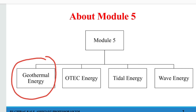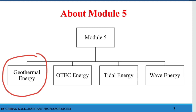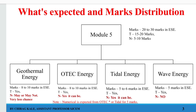Initially, we should know how much marks are distributed for this particular topic. The entire module, that is module number 5, will be for around 20 to 30 marks in your end semester exam. Out of which, there will be definitely 15 to 20 marks theory and 5 to 10 marks numerical. In the first topic, that is geothermal energy, it consists of around 8 to 10 marks of theory.